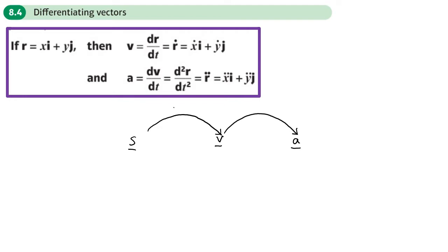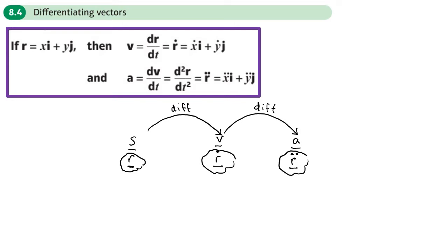Now I just need to introduce some notation. When dealing with vectors, we use R to represent displacement. To show velocity we use R with a dot above it, and R with two dots above it to represent acceleration. This is the notation we use when working with vectors, and we can also integrate and go backwards.